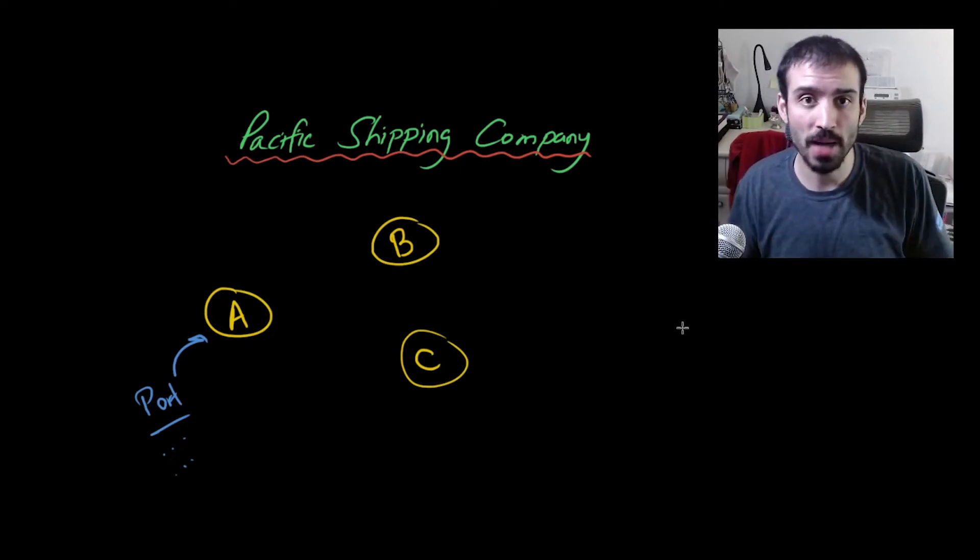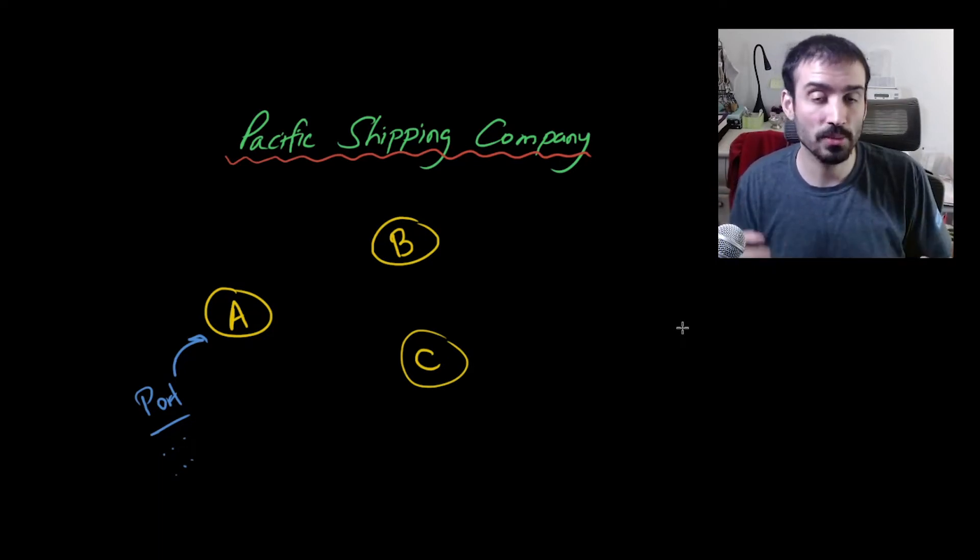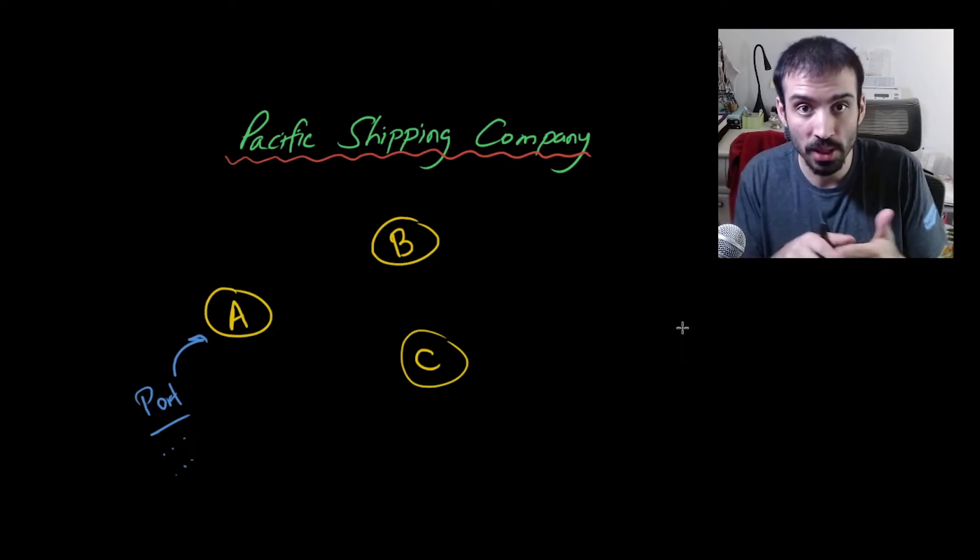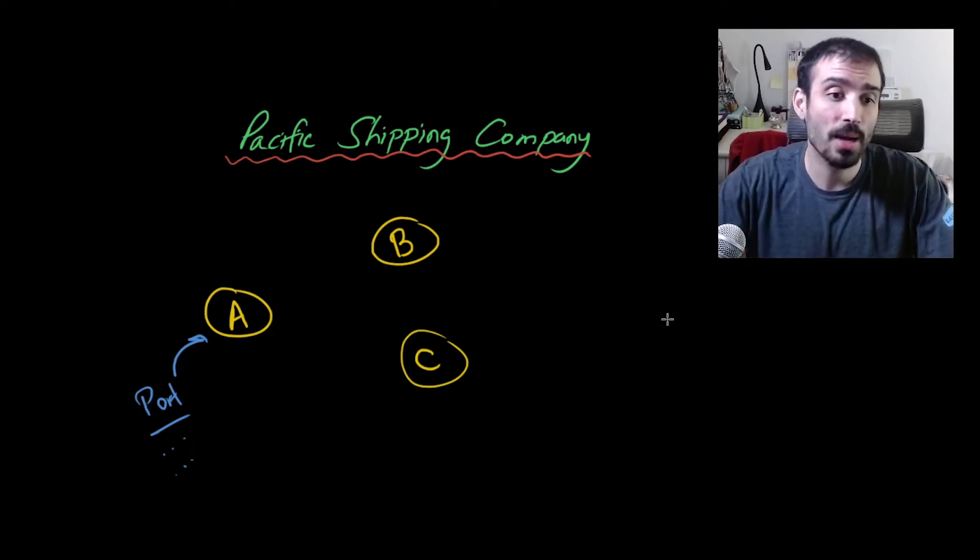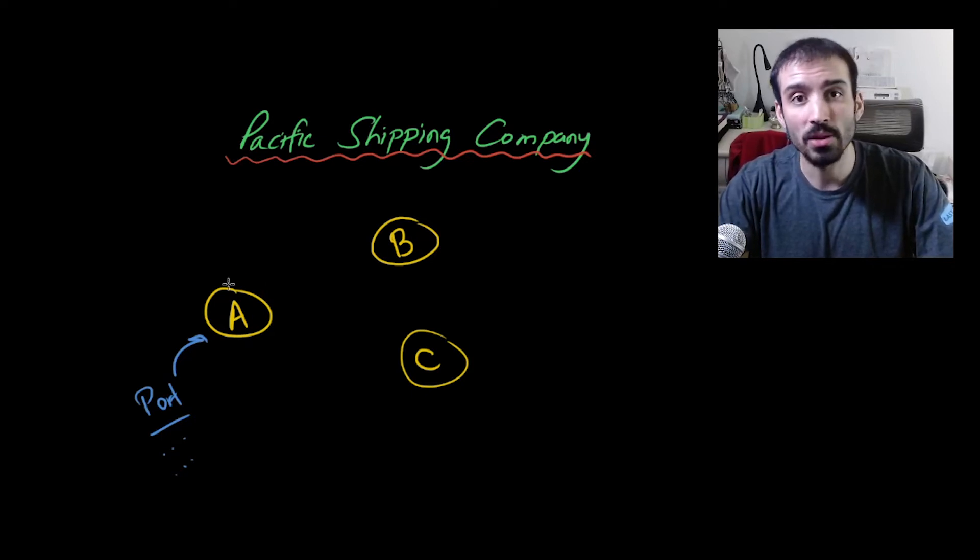And within this system, our job is to represent sequences of routes that some system generates so that it can kind of go between these different ports, pick things up, drop things off, et cetera. So our job is to kind of maintain this logic, right? So how can we represent that?